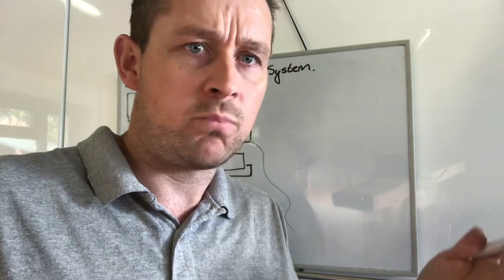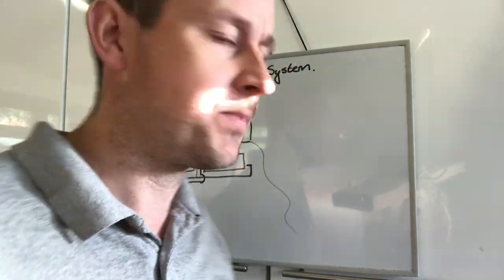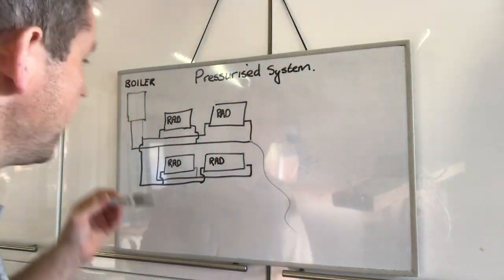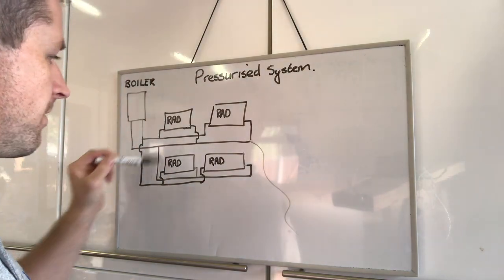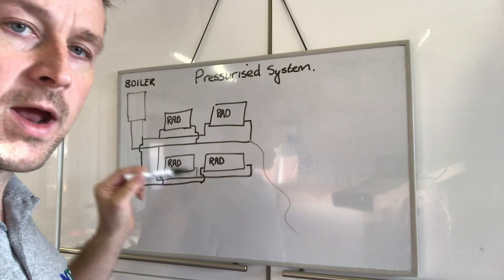So what is an airlock? What are they in your central heating system? It's a brief diagram here which I'll come on to in a moment. So obviously your boiler, you've got your flow and your return pipe work and you've got your radiators.